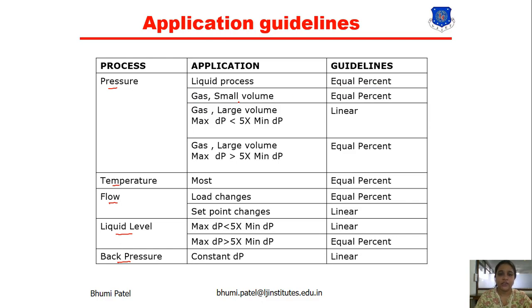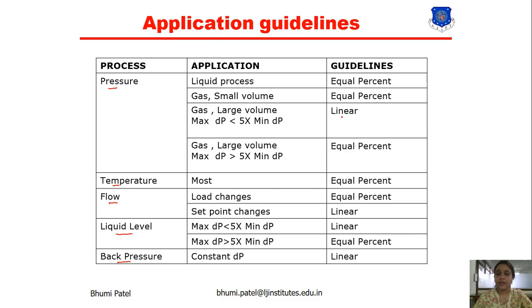For gas with large volume, where the maximum differential pressure is less than 5 times the minimum differential pressure, we must use linear characteristics. For gas with large volume where the maximum differential pressure is greater than 5 times the minimum differential pressure, we use equal percentage.